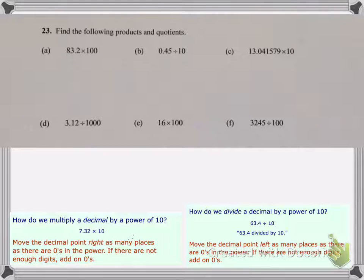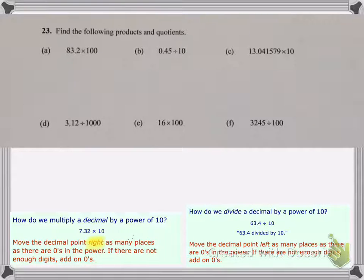Down at the bottom you can see the rule for multiplying a decimal by a power of 10 and the rule for dividing a decimal by a power of 10. If we multiply a decimal by a power of 10 we are going to move the decimal point to the right as many places as there are zeros in the power. If there's not enough digits we add extra zeros.